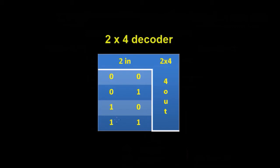So what is a decoder? Let's imagine we have two inputs — an input A and an input B. We've only really got two bits, bit A and bit B. But those two bits could give us four possible combinations: 0,0 — 0,1 — 1,0 — and 1,1. So in effect, we're putting two bits in but we can get four out. This is a 2x4 decoder — it takes the two bits and gives us access to all four combinations of those two bits.